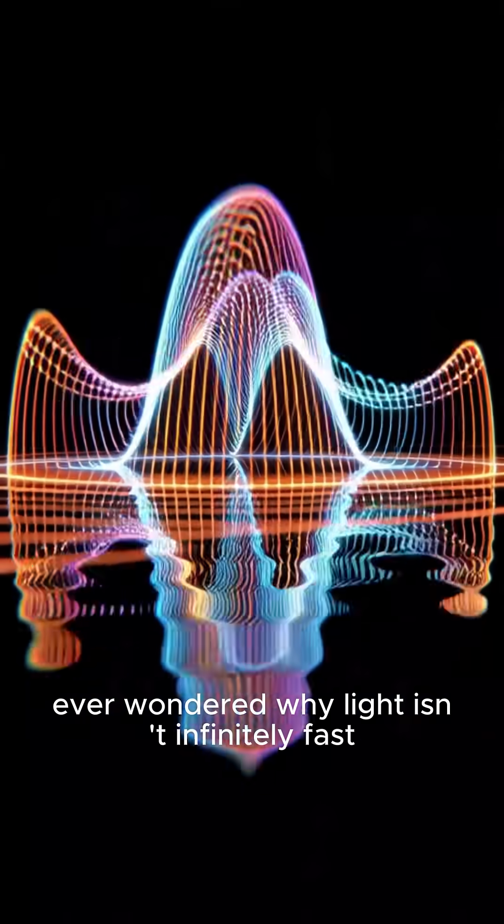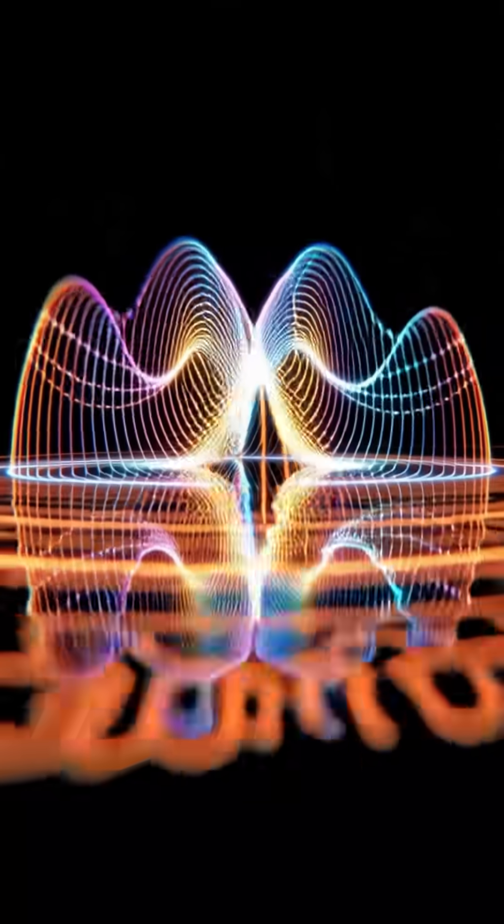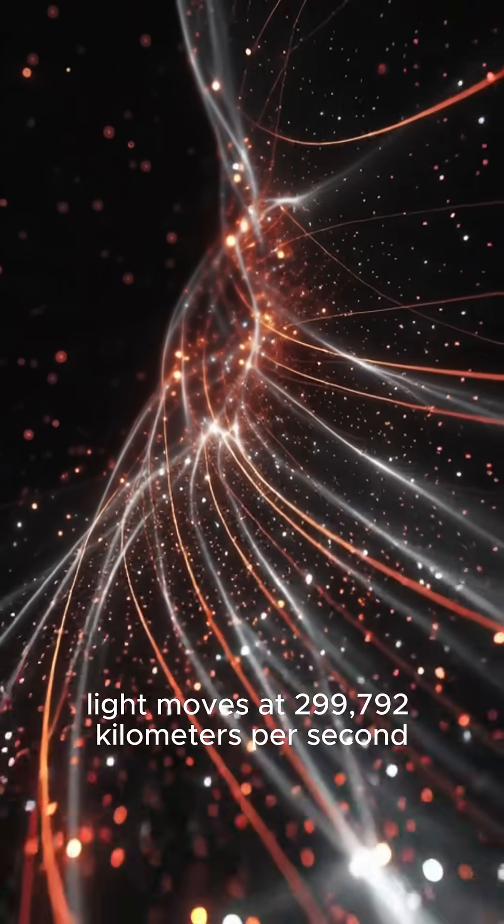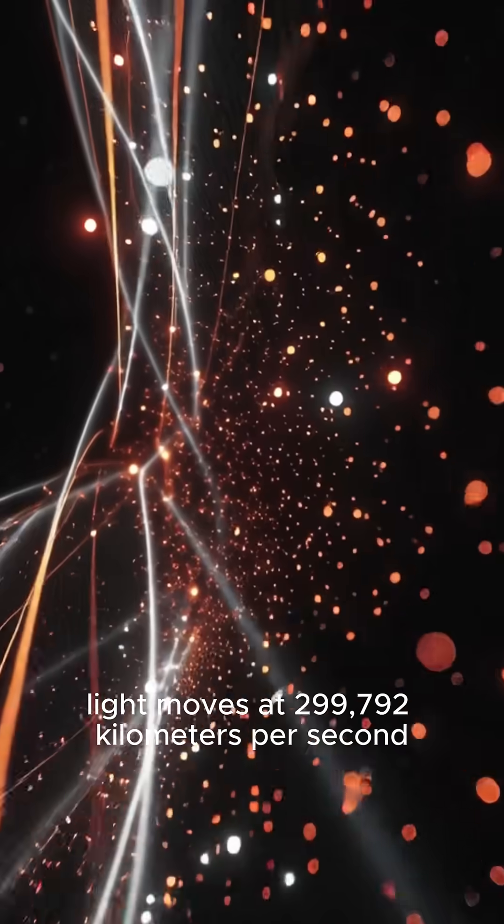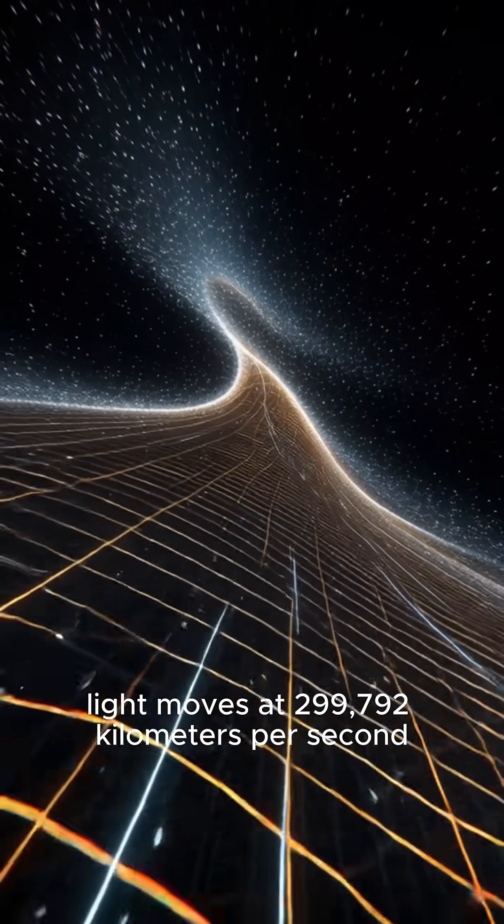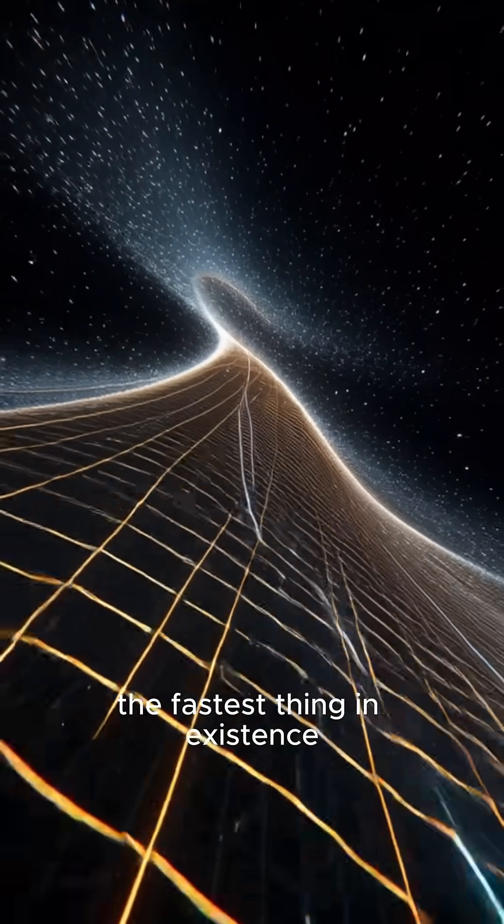Ever wondered why light isn't infinitely fast? Light moves at 299,792 kilometers per second, the fastest thing in existence.